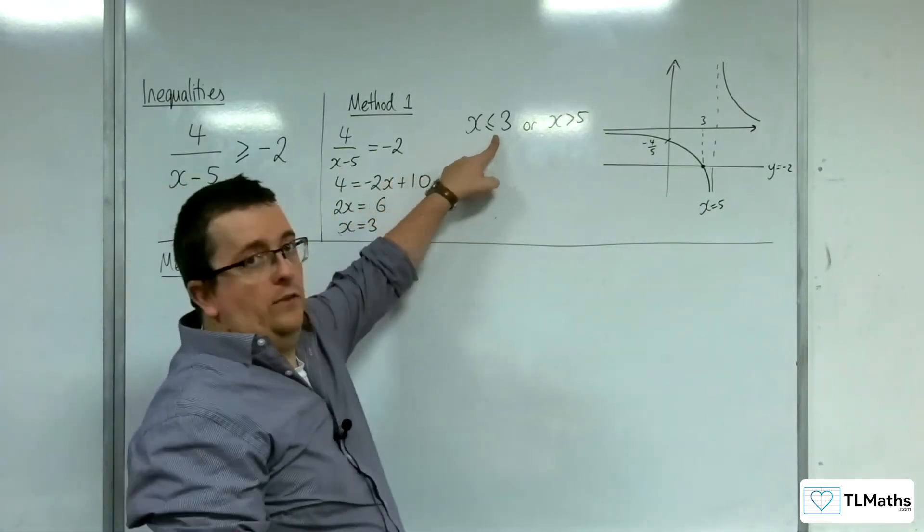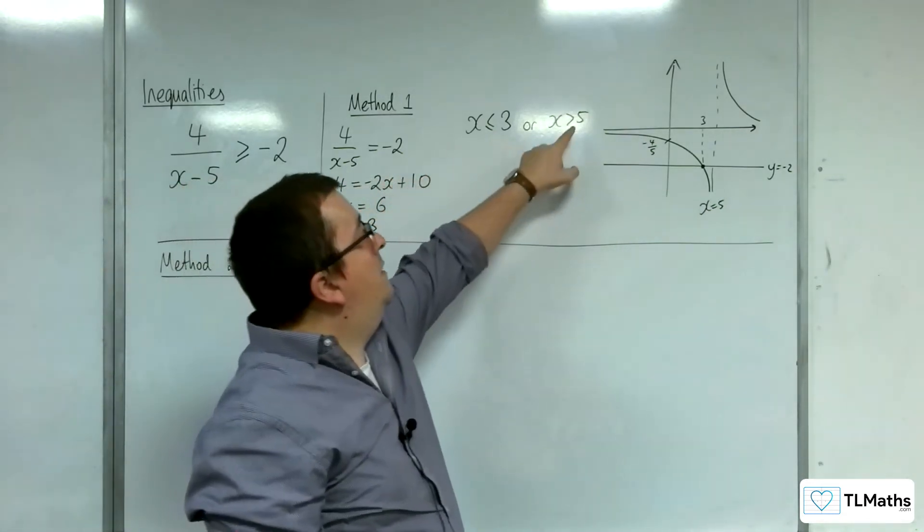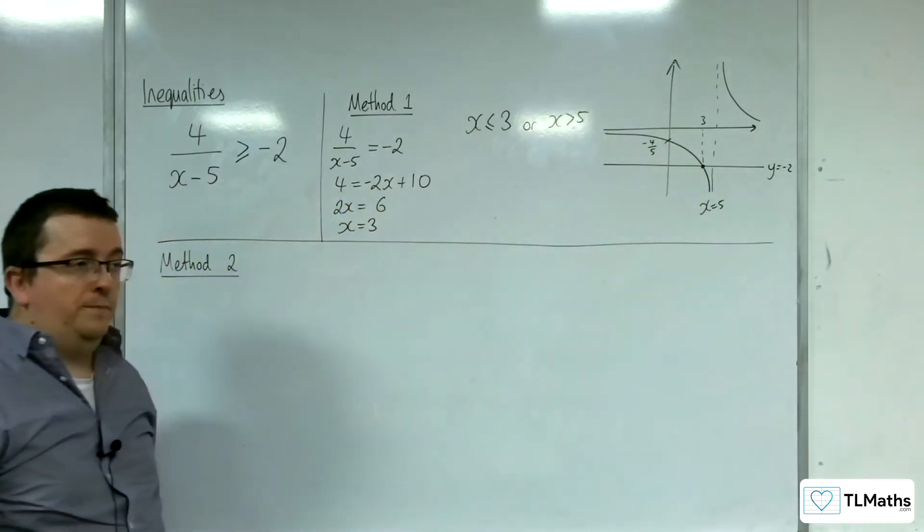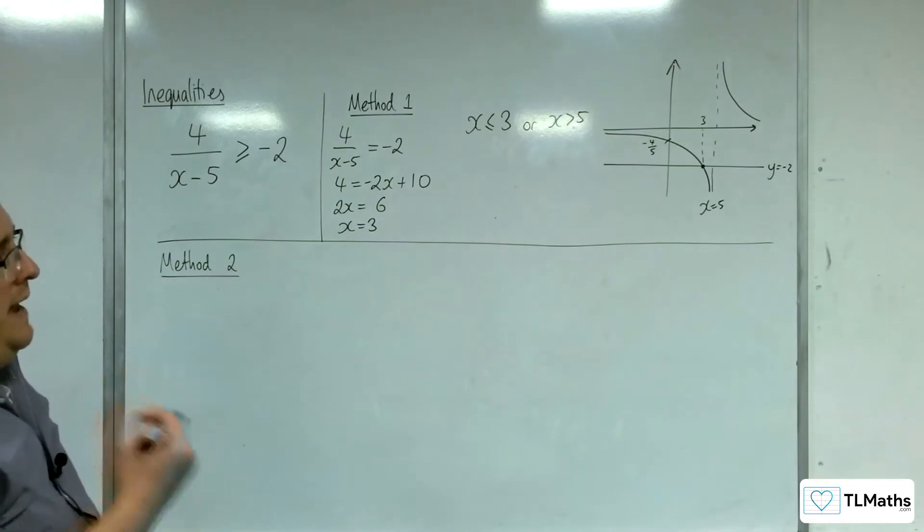Here I am including the 3, but I can't include the 5 because x equals 5 is where you've got the vertical asymptote. So be careful with that.